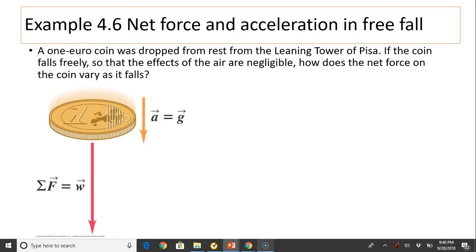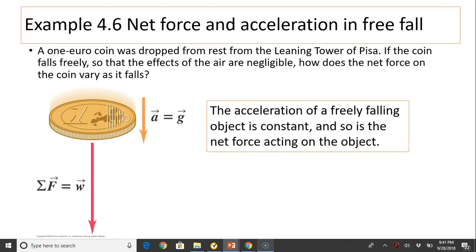Let's take a look at this example. When a real coin was dropped from rest from the leaning tower of Pisa, if the coin falls freely so that effects of air are negligible, how does the net force on the coin vary as it falls? Well, because acceleration of a free-falling object is constant, so its weight is constant. So there is no change in the net force.